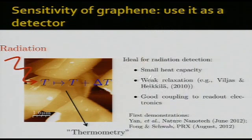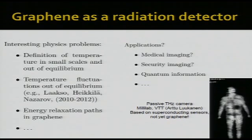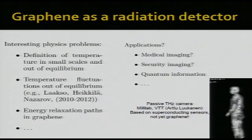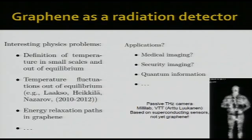One more topic: you can use graphene for radiation detection and create nice pictures. This image was made not with graphene radiation detection but with a superconducting sensor in the VTT millilab — you can measure the thermal noise emitted by a person and see their temperature without illuminating them. The idea in the Laudan's lab is always to study generic phenomena, but sometimes those phenomena can be used for applications. Thank you for your attention.